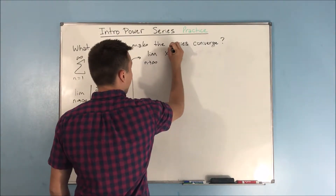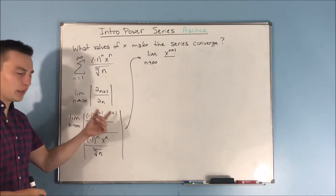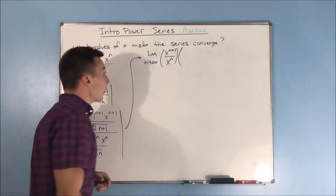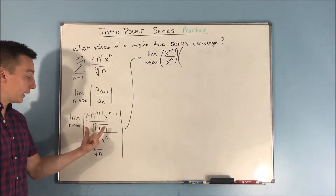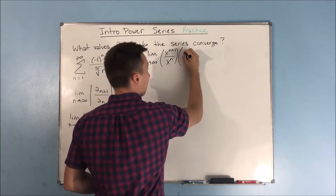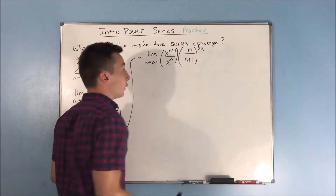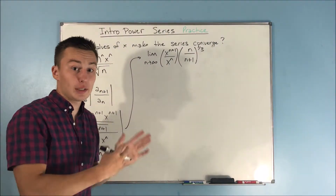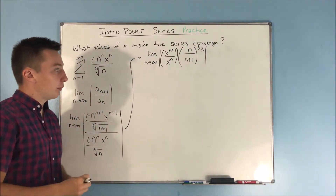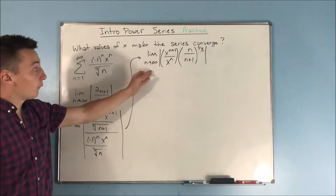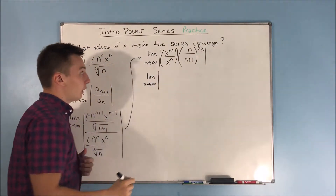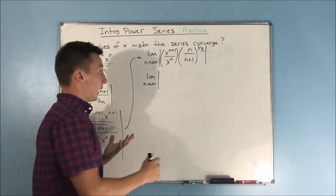We get the limit as n approaches infinity of x to the n+1 over x to the n, times the cube root of n over the cube root of n+1. I'll rewrite this as x times n over n+1 to the one-third. So we have the cube root of n on top and cube root of n+1 on the bottom, expressed as the one-third power.